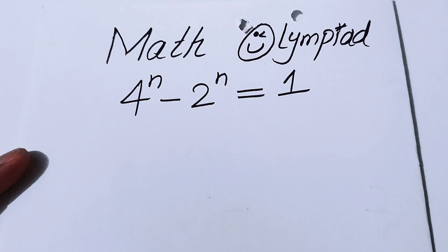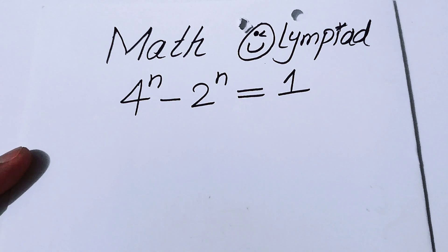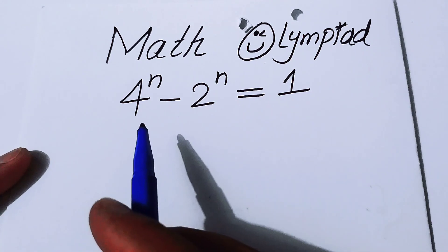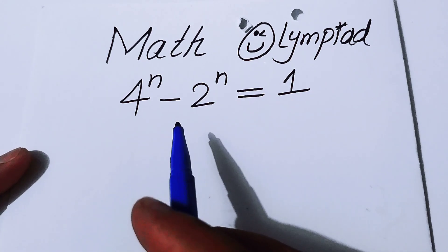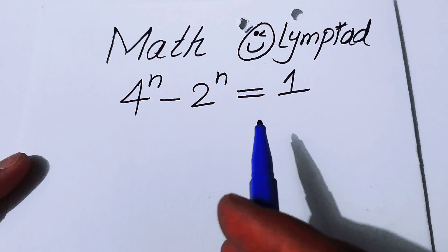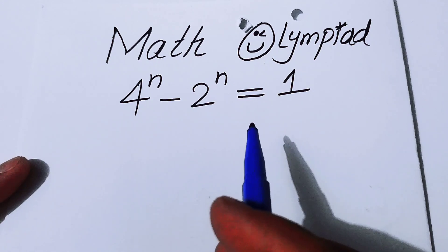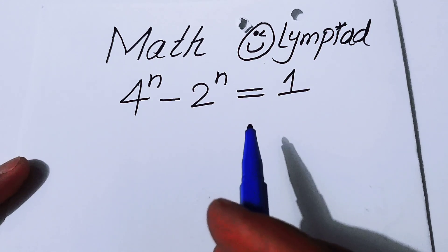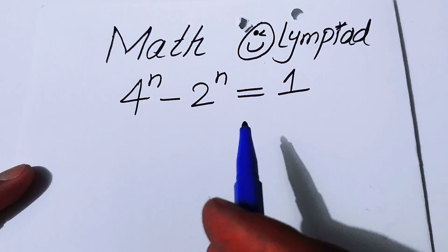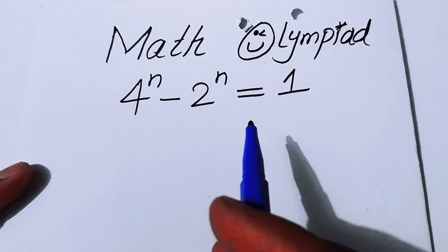Hello everyone, welcome back to the Map of Mathematics. In this video we are going to solve this nice algebra problem: 4 to the power of n minus 2 to the power of n is equal to 1, and we will solve this problem for the value of n.